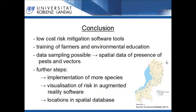The mentioned method shows the application of low-cost risk mitigation software tools. They are free of charge and usable by people with a low monetary budget. The farmer is trained in the case of having insects on the field and educated in environmental problems. Through the identification of insects in combination with temporal and spatial data, it is possible to create distribution maps of the insects, which can be helpful tools to monitor their presence in the future. Further steps needed to improve this method are the implementation of more species in the identification tools, the visualization of the actual risk in the augmented reality software with a background color cue, and the creation of spatial databases where the locations of healthcare facilities are stored.